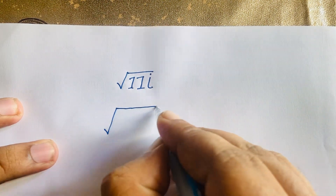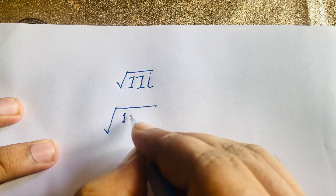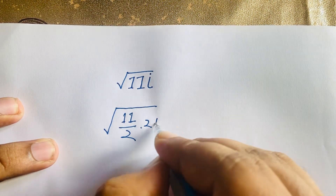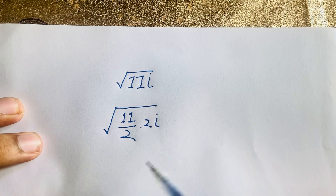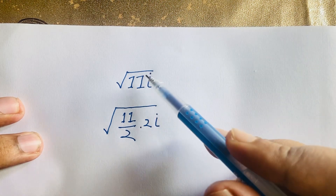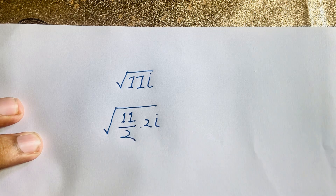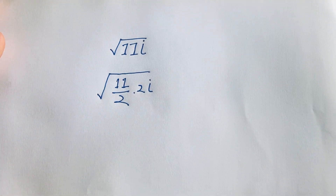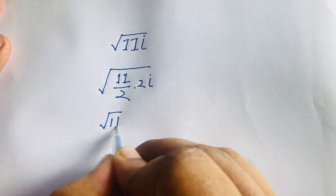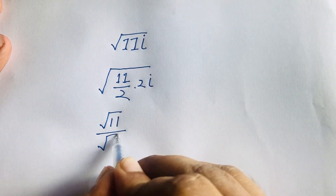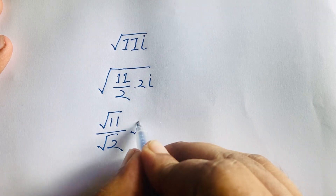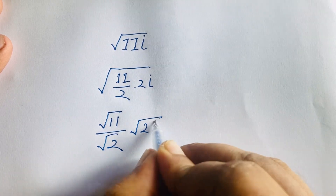Look: 11 over 2 times 2i. These two cancel, and we find the previous line again — it will be 11i. Now I can write it as square root of 11 over square root 2, and this becomes square root of 2i.